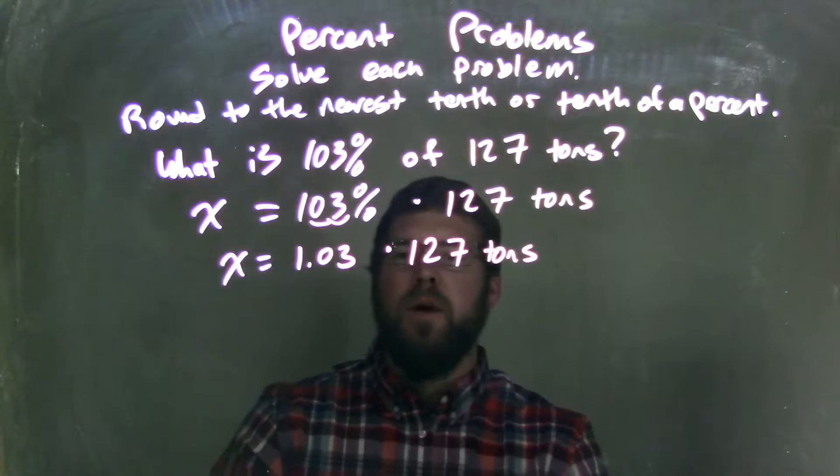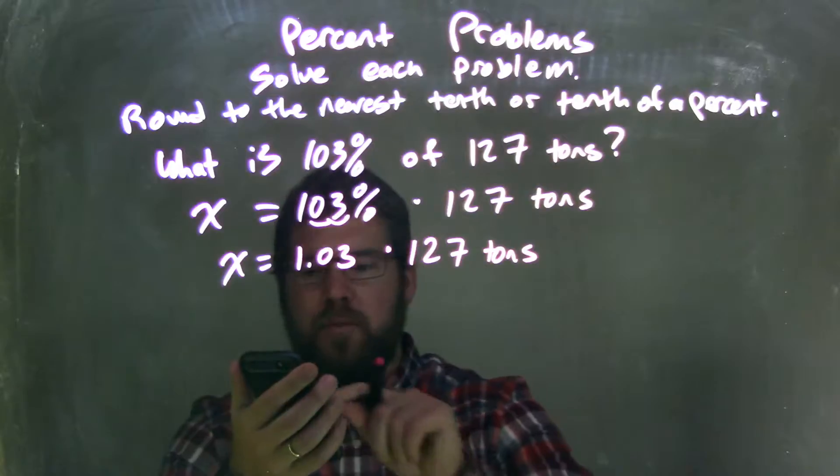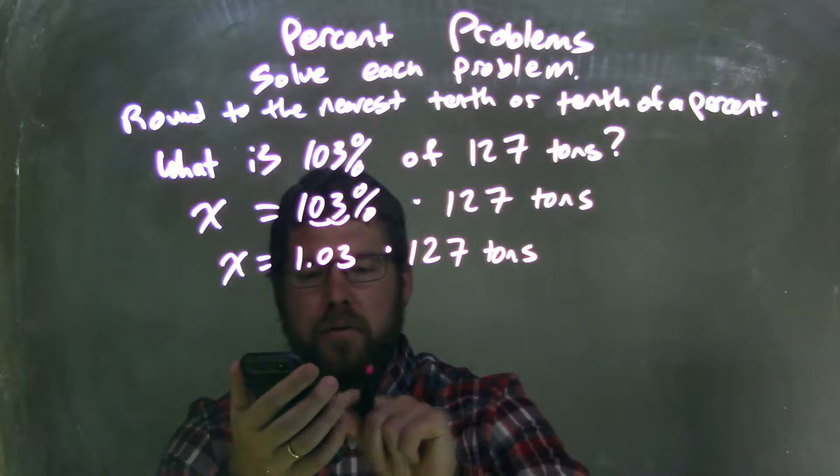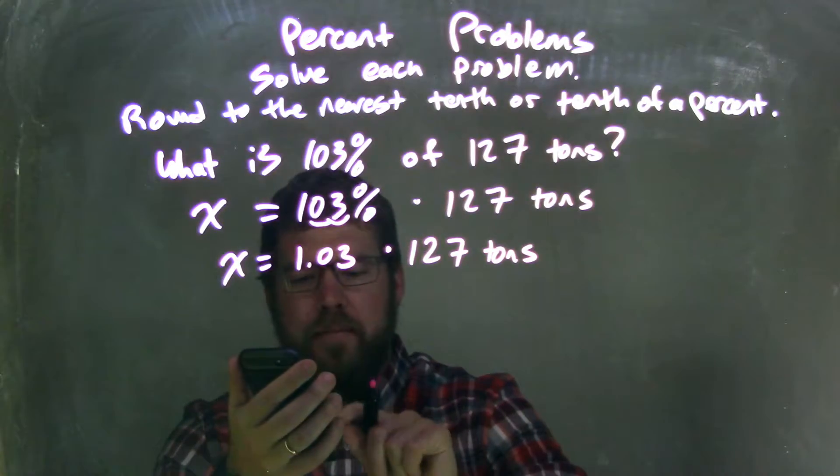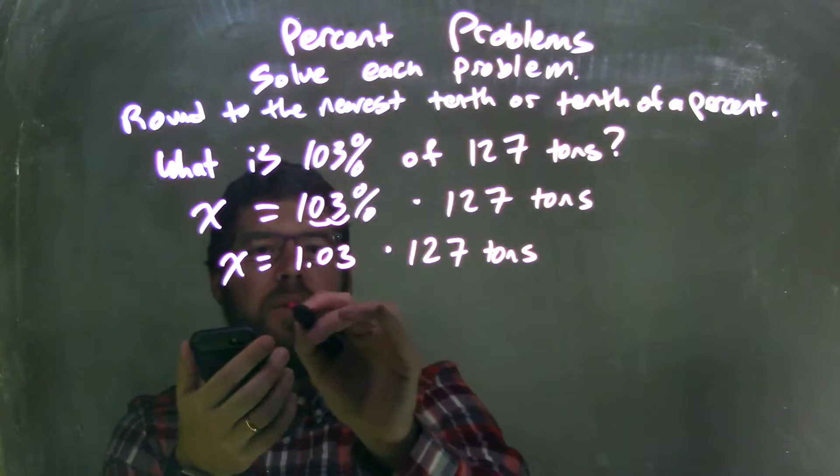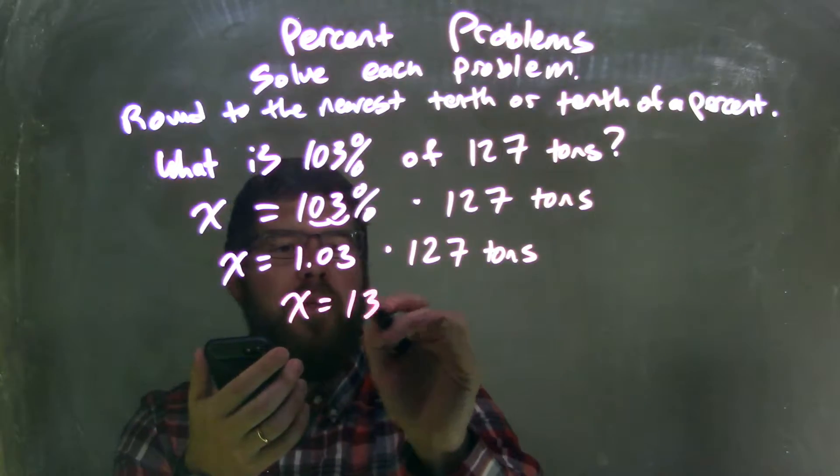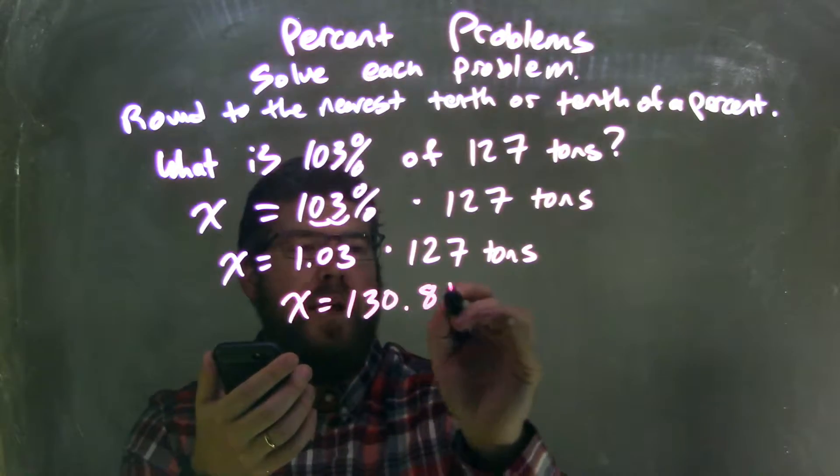Then I need to multiply that out. What's 1.03 times 127? That's equal to 130.81. So we have x equals 130.81 tons.